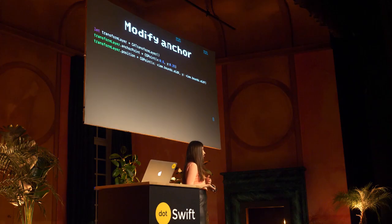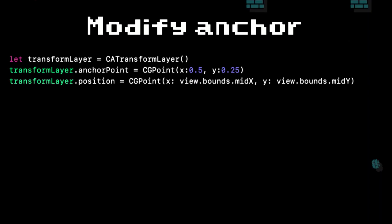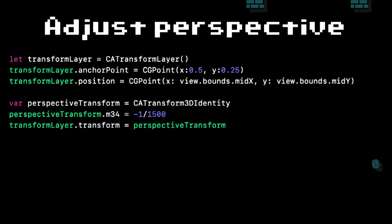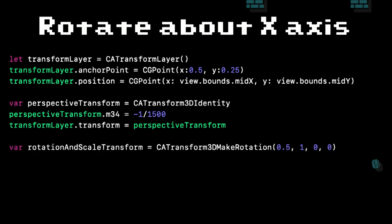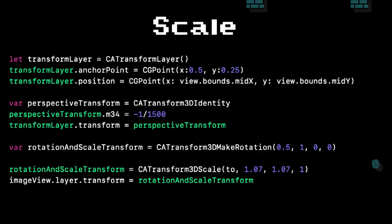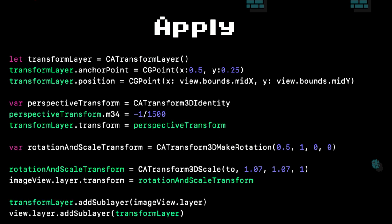The first thing we'll need to do is modify the anchor, and you can see here that the y is a little bit higher than the origin. The second thing is the perspective — this is where that mysterious m34 comes in. Then we're going to make a rotation. In Instagram they're doing this on a gesture, but I just put in a value that looked okay in an animation. And lastly, we apply the scale — I didn't do any math like they have; I just put in some values that look good and made the whole thing animate. And we add it to the layer, using one layer for the depth and another layer for all the other transforms.